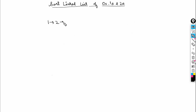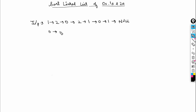Say this is my list again: 1, 2, 0, 2, 1, 0. If this is the input, the output should be two zeros in front, then 1, 1, 1, and then 2 and 2.